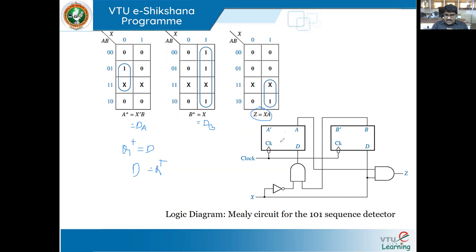This is flip-flop A and this is flip-flop B. D-A is given by x-bar times B; D-B is simply x-bar times A-bar; and z equals x times A. This is the circuit obtained. So from the given problem statement we understood the problem, got the state graph, from the state graph got the state table, from the state table derived the expressions using D flip-flops, and from the expressions built the circuit. This is a Mealy circuit for the one-zero-one sequence detector. The same problem will be designed as a Moore machine in the next session.